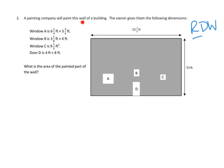A painting company will paint this wall of a building. I can see it right here. The owner gives them the following dimensions. This is the whole wall — it looks like it's 33 feet tall and 52 and one-half feet wide. And then it looks like there are these cutouts. Window A is 6 and one-fourth feet by 5 and three-fourths feet — that's this window right here. And then there's window B right here, which looks smaller.